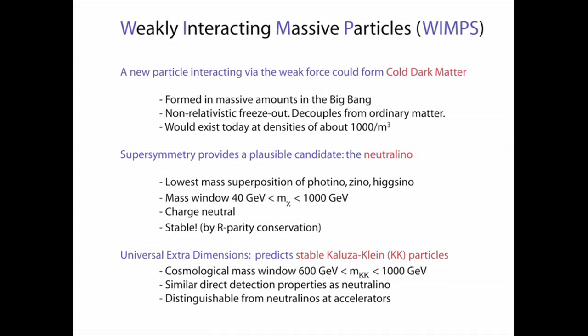One of the ideas for what dark matter is is called a WIMP — a weakly interacting massive particle. 'Weak' is a technical term in physics; it refers to something interacting through the weak force, one of the four forces of nature. This idea is not entirely crazy — you could have a weakly interacting particle that's never been detected yet, that's heavy enough to bring enough gravity to hold these galaxies together. We already know of a weakly interacting particle that we detect all the time: it's called the neutrino.